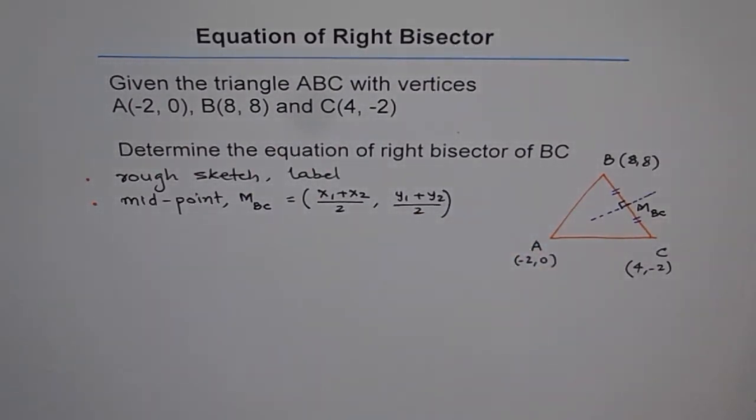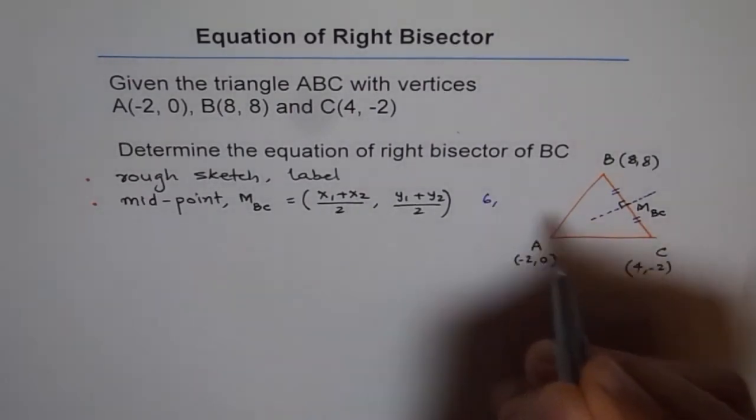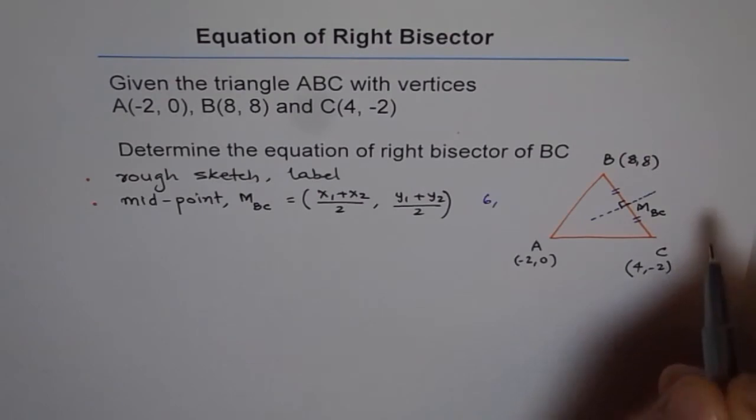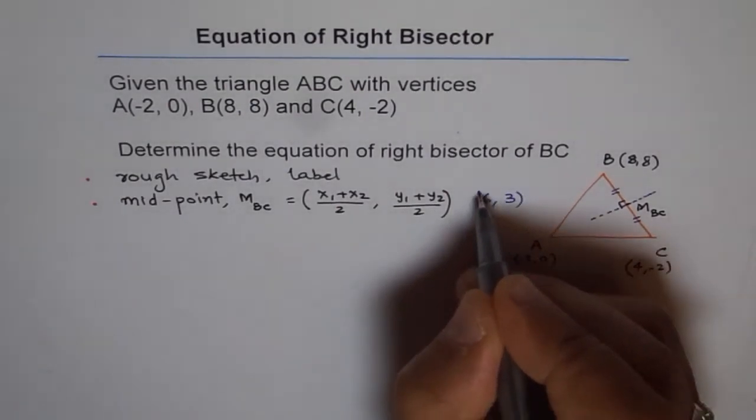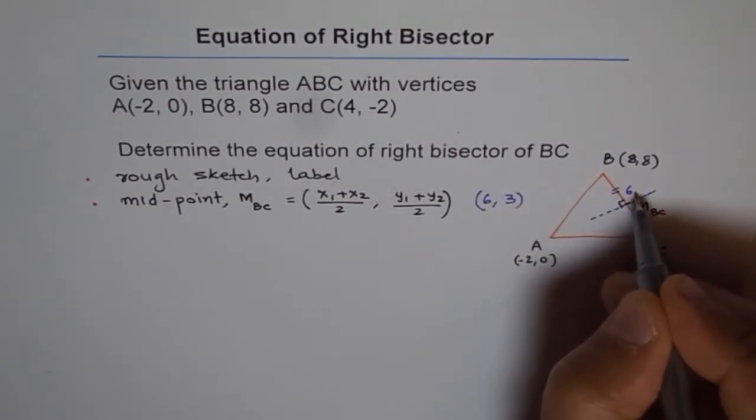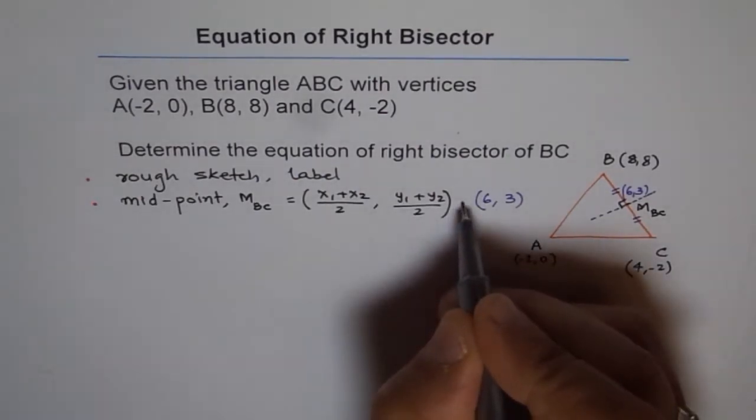In our case, what is the midpoint? So if I add 8 and 4, I get 12. And 12 divided by 2 is 6. So we get 6 as the x coordinate. And if I add 8 and -2, I get 6. 6 divided by 2 is 3. So I get 3 here. So my midpoint is (6,3). I am leaving these calculations for you too. So you can always do and get that answer.